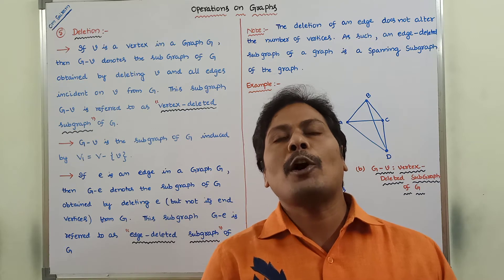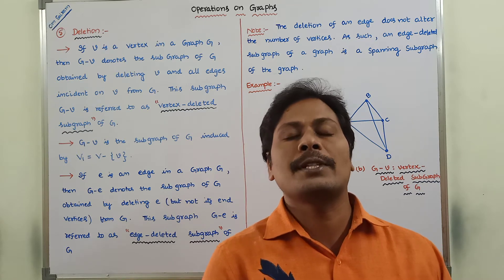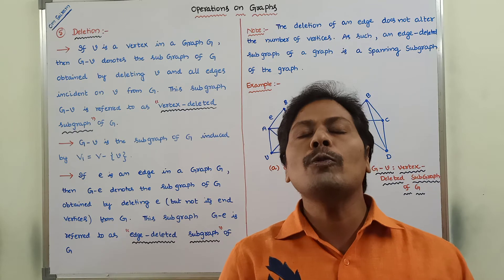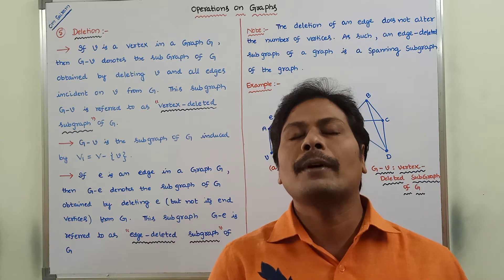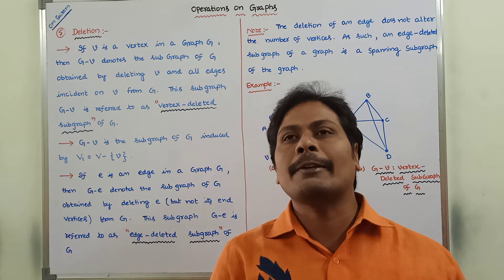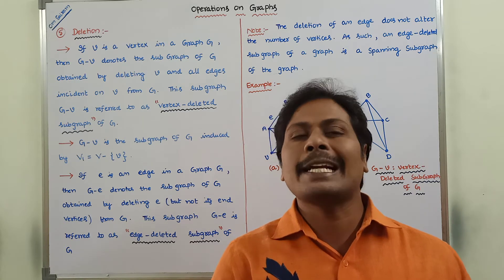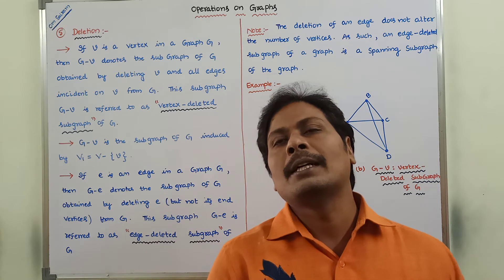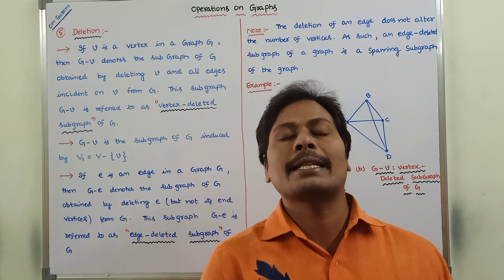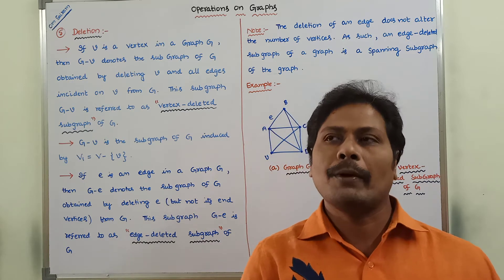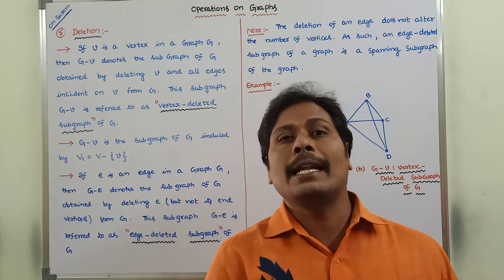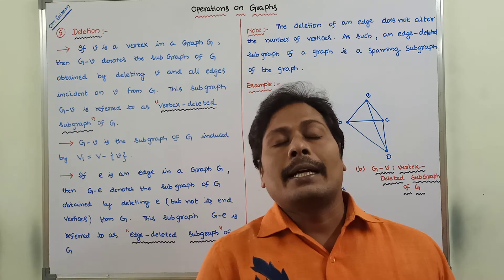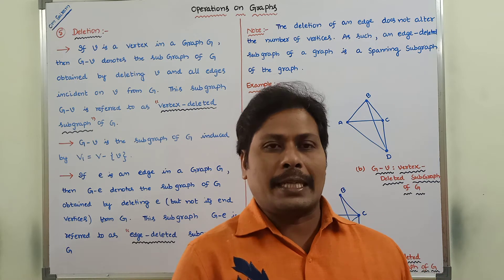How are we performing the vertex deleted subgraph of G, and how are we performing the edge deleted subgraph of G? That means, how a vertex can be deleted from the given graph, and how an edge can be deleted from the given graph. If a vertex V is deleted from the given graph, then we are getting a subgraph called the vertex deleted subgraph of G. If an edge is deleted, then the subgraph we get is the edge deleted subgraph of G.